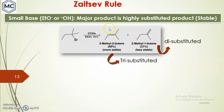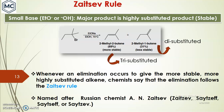In this example, the more substituted product will be more stable. The first compound is a trisubstituted product — it has three substituents: one, two, and three. The other has two substituents — a disubstituted alkene, one and two. The trisubstituted product transition state will be stabilized, and that is the reason. Whenever elimination occurs to give the more stable, more highly substituted alkene, chemists say that elimination follows Zaitsev's rule. This rule is named after Russian chemist Zaitsev — it can be spelled either way.